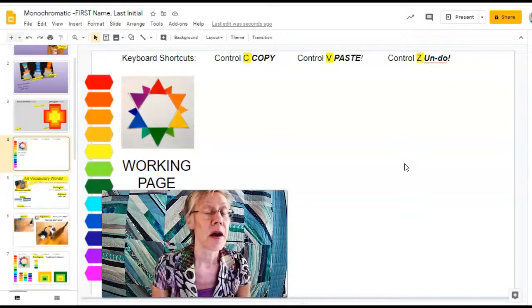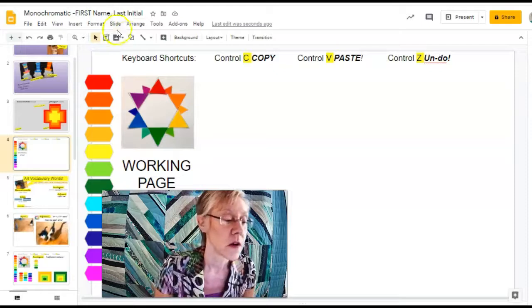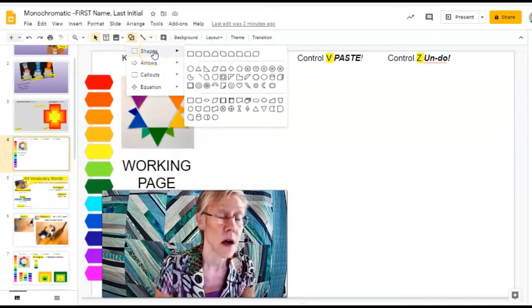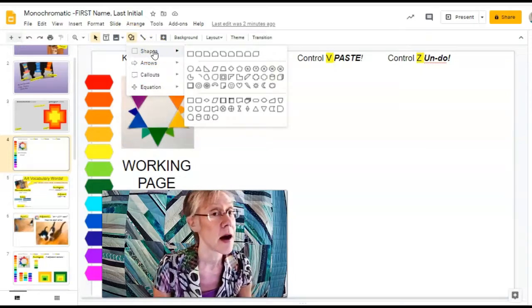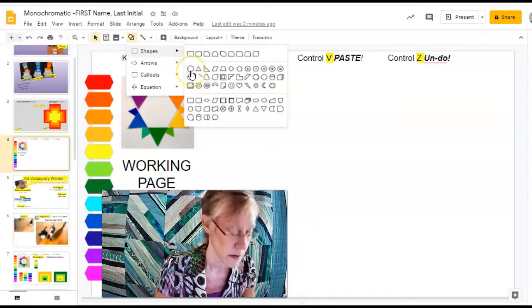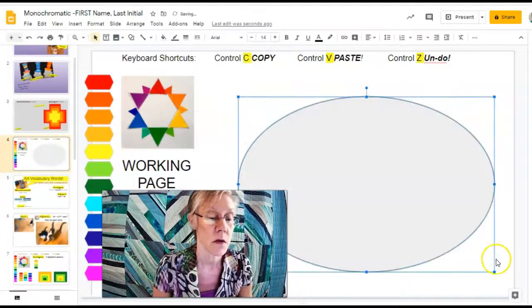Now, here's how you draw the monochromatic picture. You find the shape tool. If you want a challenge, choose a complicated shape. But I highly recommend either a circle or a square. I'm going to choose a circle.